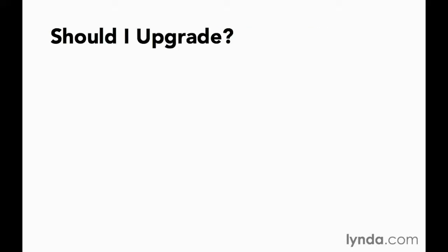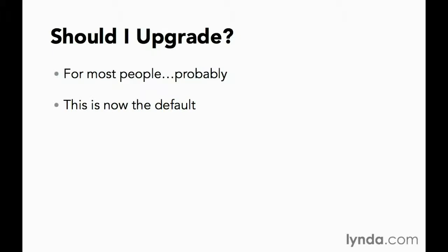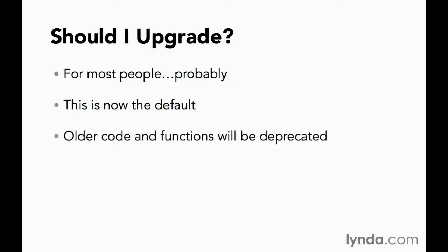So the big question is: should you pull the trigger and upgrade? As a consultant, I'm inclined to say it depends, but I'll budge a little bit and say that for most users, yes. This is now the primary code base, and it is Google's goal to have 100% adoption as fast as they can make it happen, because it's very expensive for them to maintain two different processing pipelines. They're going to be deprecating older code bases, so eventually you'll be facing forced upgrades. Don't expect that to happen for a little while, but sooner or later it's going to happen.